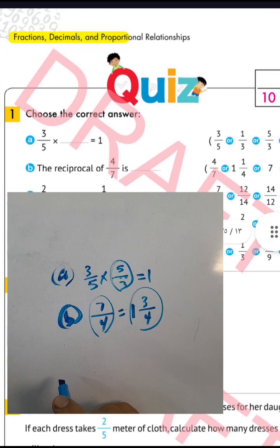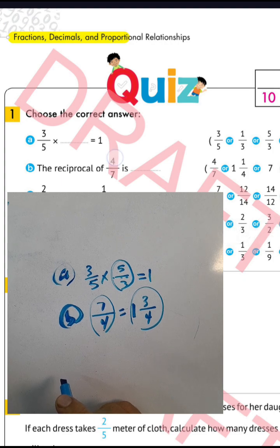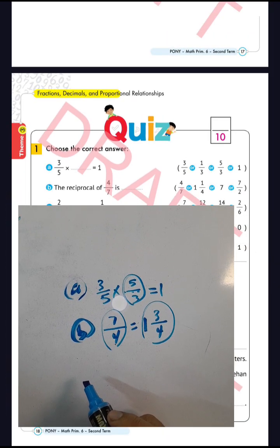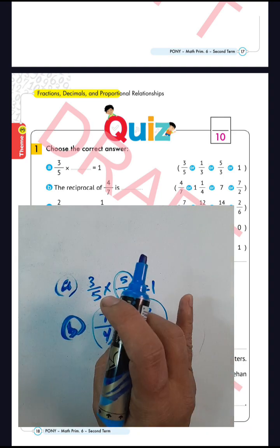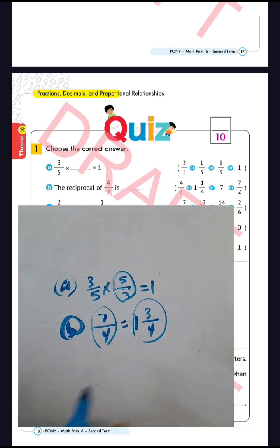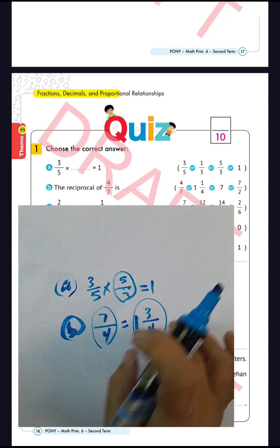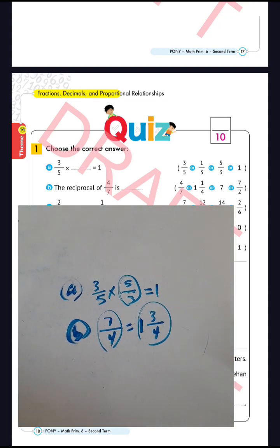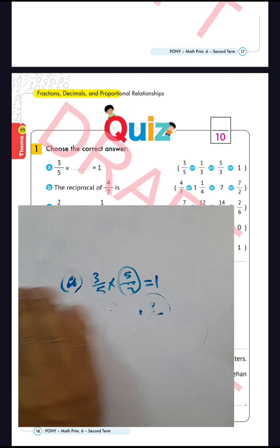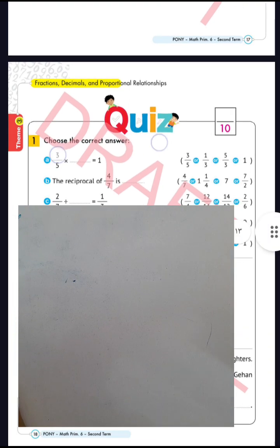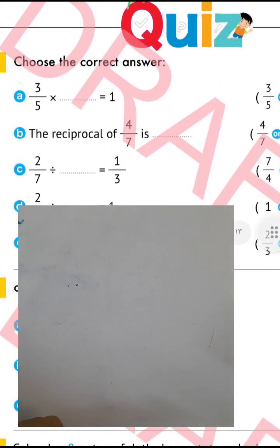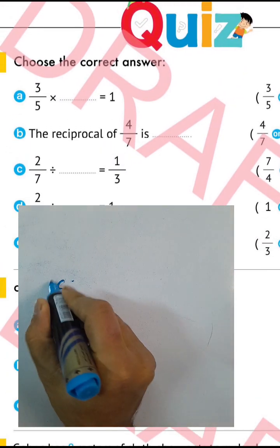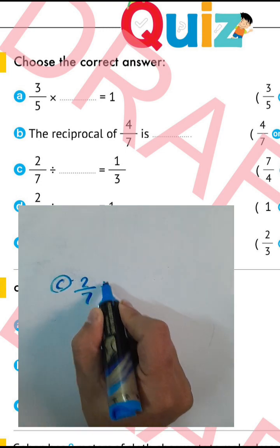The reciprocal of four over seven is seven over four. Since the answer choices don't have seven over four directly, convert seven over four to one and three over four — converting from improper to mixed number. Understood. Question letter C: two over seven divided by what equals one third? Can you tell me?